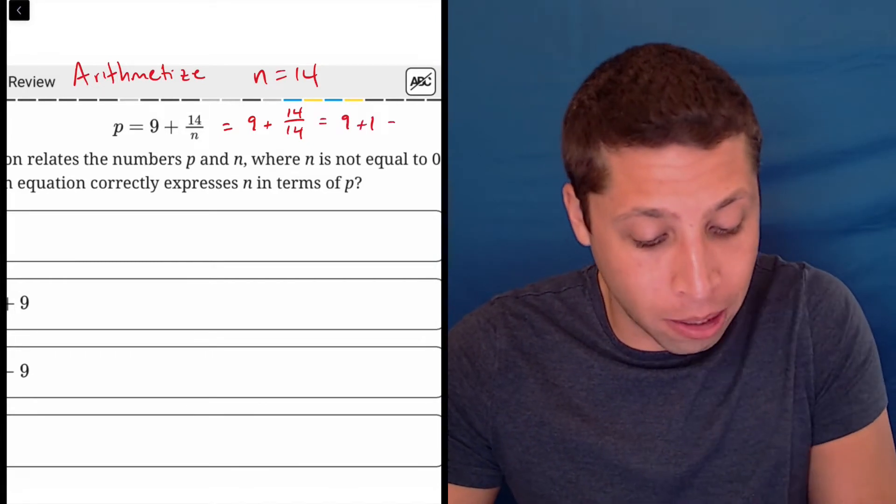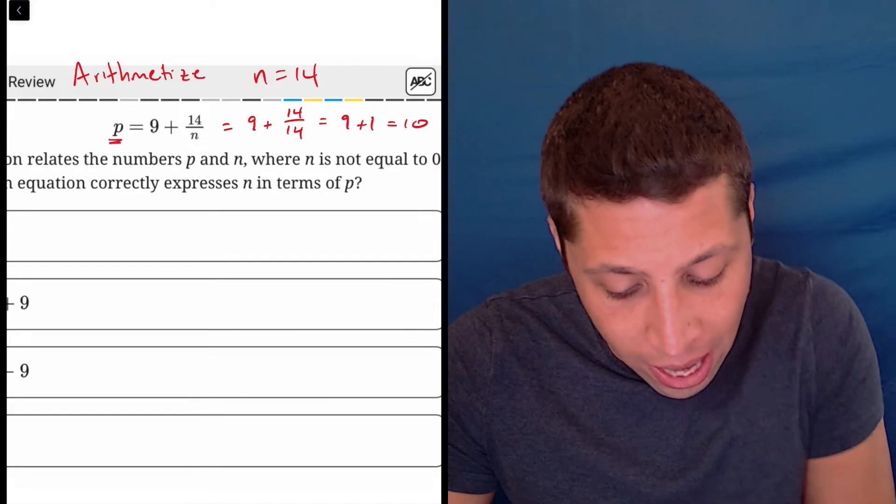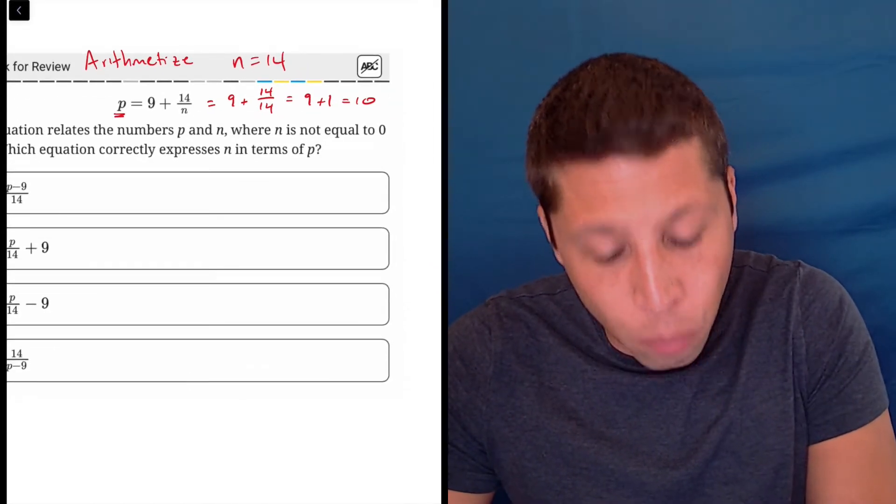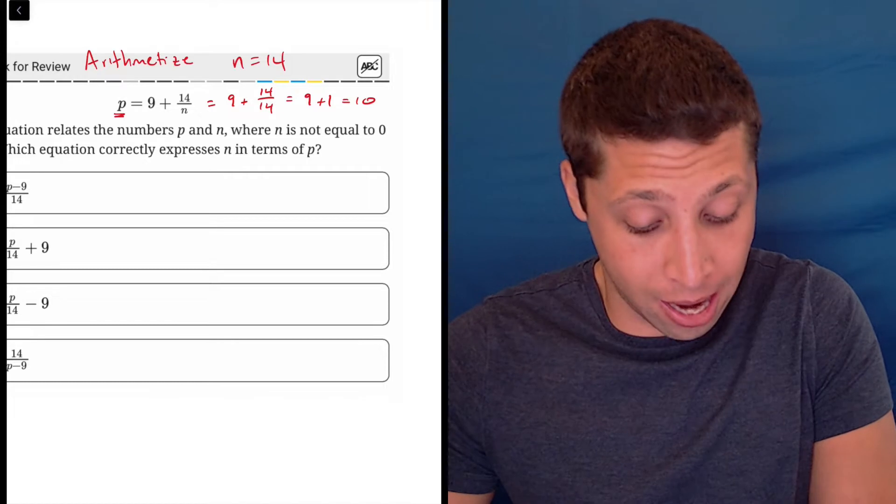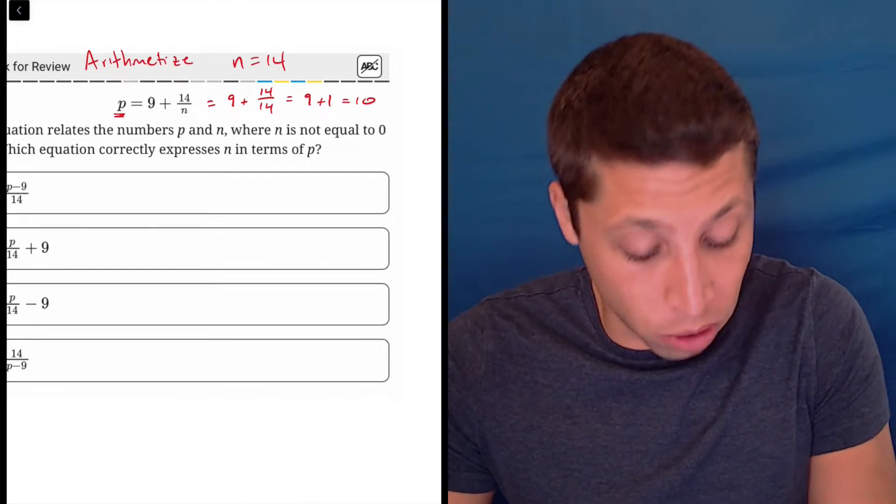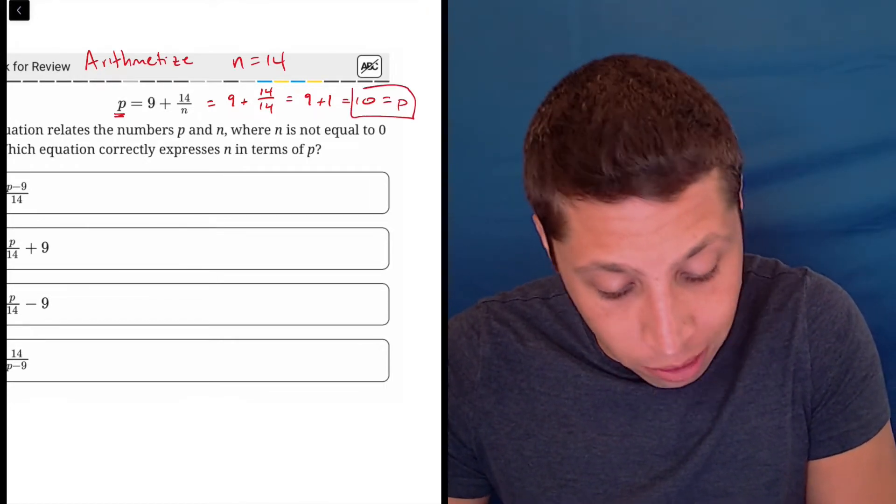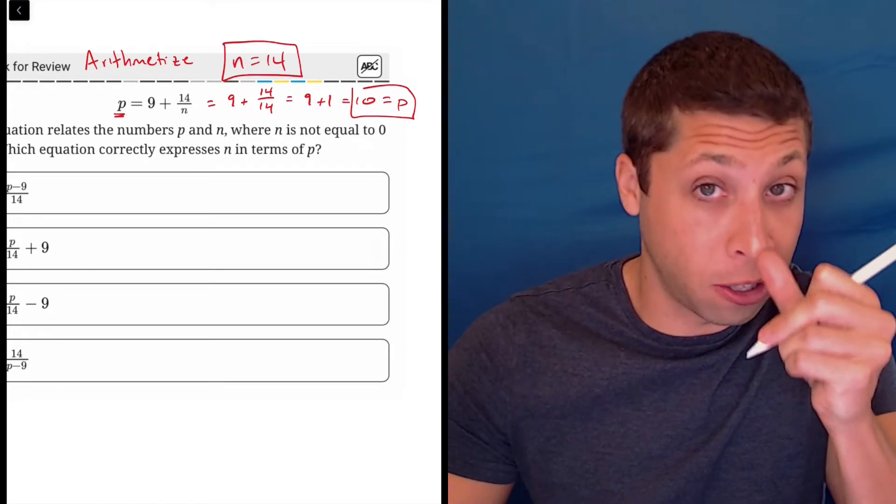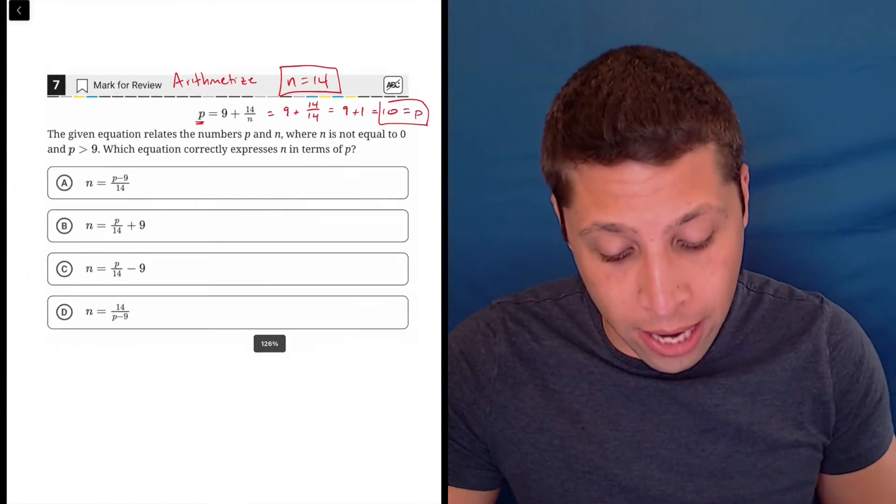So 9 plus 1 is 10. So, to be clear, what we just found is that when we arbitrarily say that n is equal to 14, p is equal to 10. So, I'm going to box these two numbers because these are the two that are going to help me now understand the answer choices.